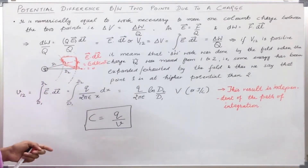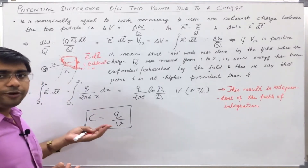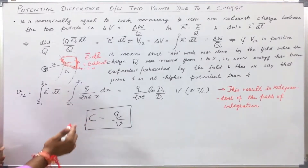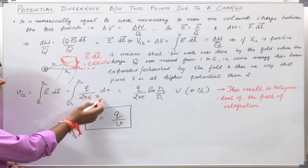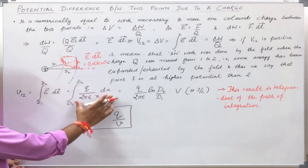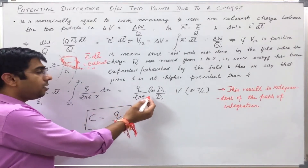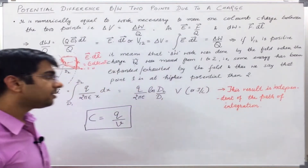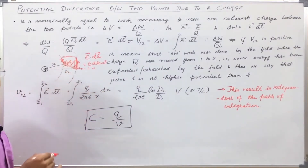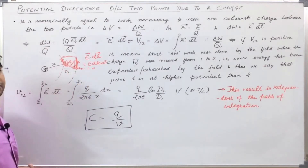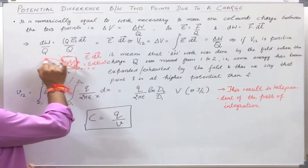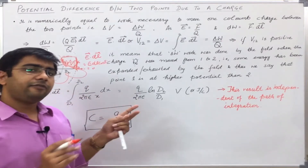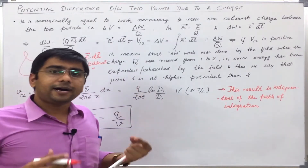In the previous video I derived the expression of field due to a point charge or due to a line charge with uniform line charge density. The expression will be the same, which will be Q upon 2π epsilon times the integral from d1 to d2 of dx, giving a logarithmic term: Q upon 2π epsilon times natural log of d2 by d1. I have already shown that this result is independent of the path taken. Whether I go in a zigzag path or directly from point 1 to point 2, the work done will be the same. The work done between two points does not depend upon the path of integration.